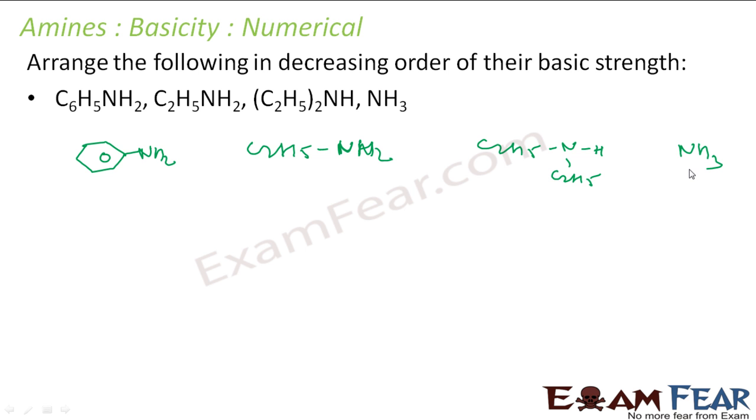So now this is electron withdrawing group. And this I can write just to make things clear. C2H5 is electron releasing group. So I have two electron releasing groups here. This one will be most basic, correct, because there are two electron releasing groups for this nitrogen. Next will be this, at least there is some electron releasing group. This we have seen that aniline is least basic. In fact, ammonia is more basic than them. So ammonia will be third and this will be fourth.